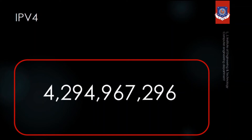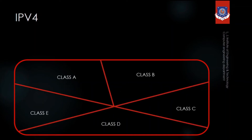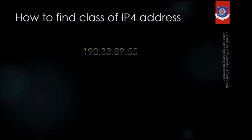To manage 4 billion IP addresses, they divided the addresses into 5 blocks: Class A, Class B, Class C, Class D, and Class E. Let's find out how to know the class of an IP address, using the example IP address 190.33.89.55.